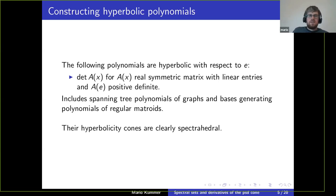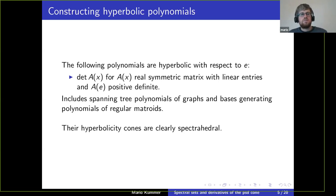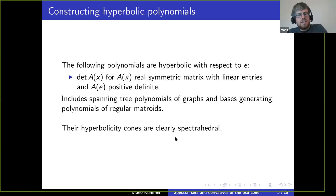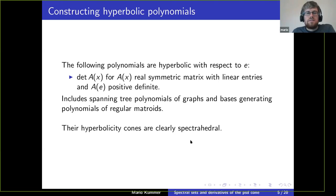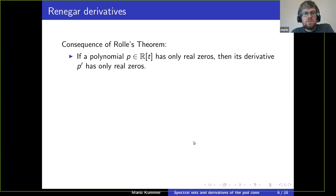So if we want to test this conjecture on some other hyperbolic polynomials, these are not the ones one should check. So how do we get other hyperbolic polynomials? There are some operations preserving hyperbolicity.